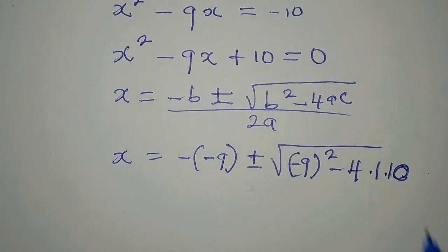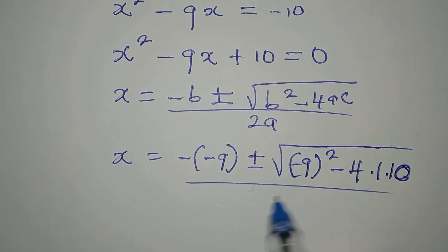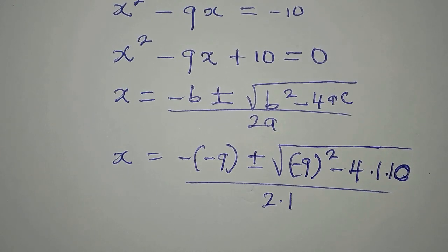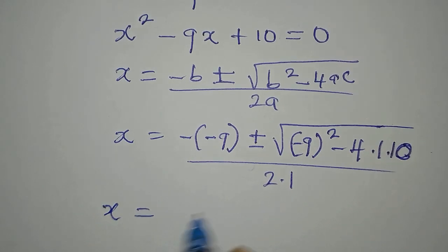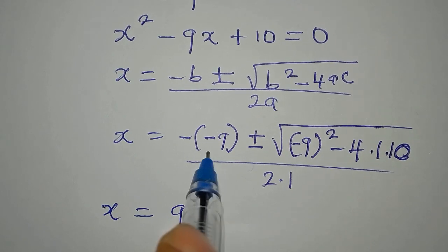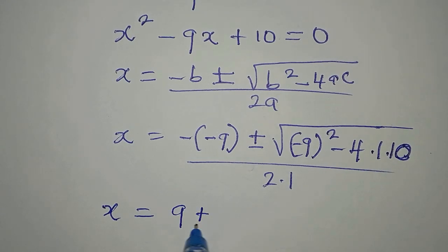So we divide by 2 times 1. So now x will be equal to plus 9 because negative negative is positive, plus or minus.